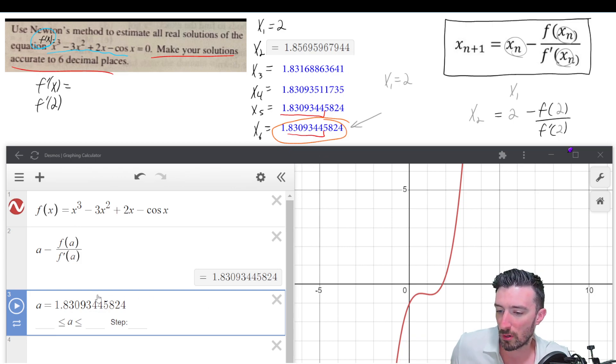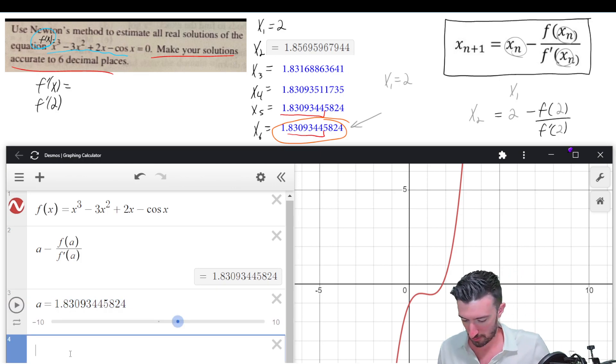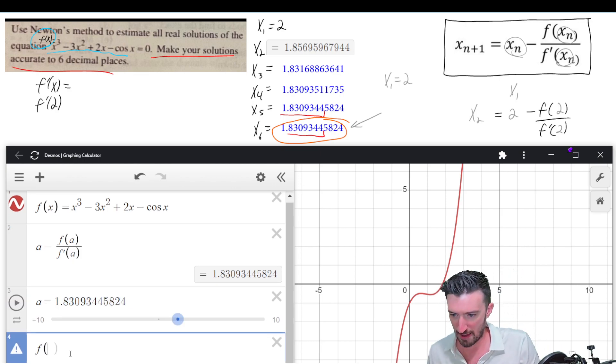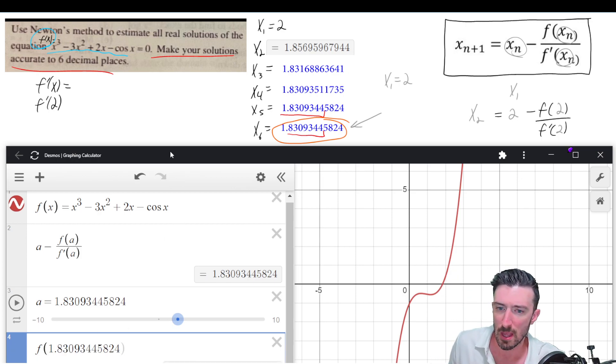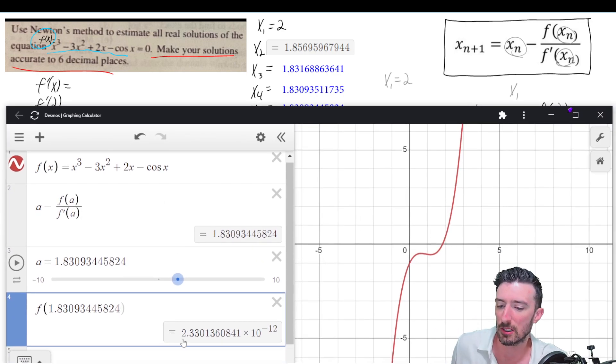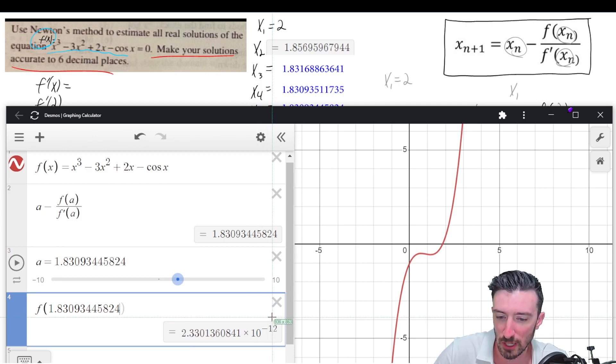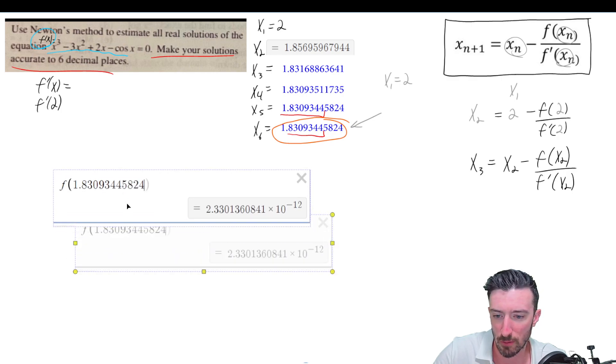Now, just to understand what we're even doing here, let's plug this number into f. Let's ask Desmos, hey, what would f of that be? And when we plug it in, it tells me it's 2.3 times 10 to the negative 12. Okay. So what the hell does that mean?